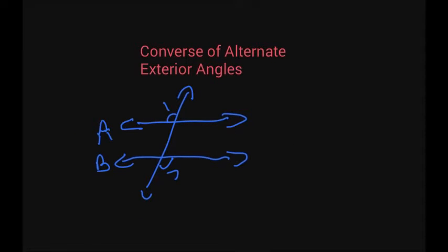And then the converse of alternate exterior angles. So if angle 1 is congruent to angle 7, which I'm showing they're congruent by these little marks, then A and B are parallel. That's the converse of alternate exterior angles. If those two angles are not congruent, then A and B are not parallel.